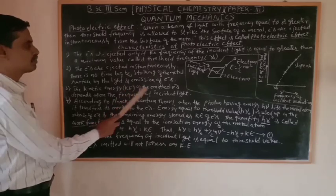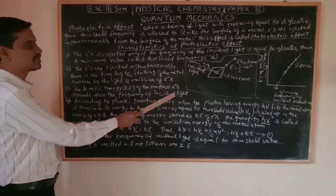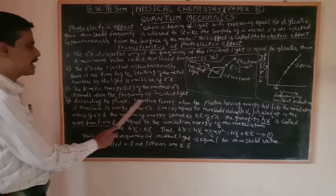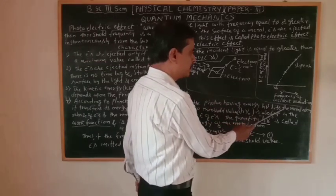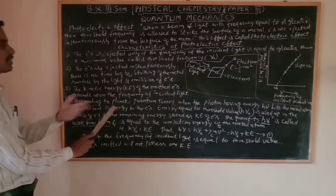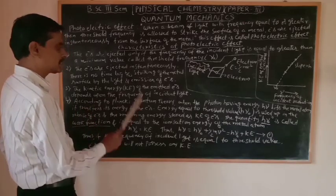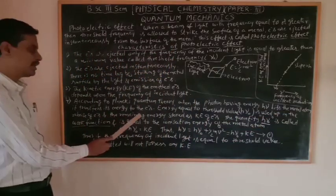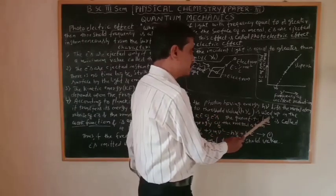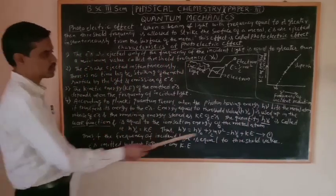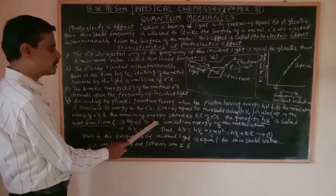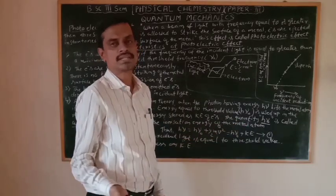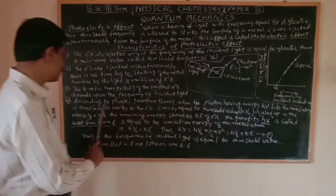The third characteristic: the kinetic energy (KE) of the emitted electrons depends upon the frequency of the incident light. If the frequency of the incident light changes, the kinetic energy also changes. Fourth characteristic: according to Planck's quantum theory, when a photon having energy hν hits the metal atom, it transfers its energy to the electron. Energy equal to the threshold value hν₀ is used to release the electron, and the remaining energy is stored as kinetic energy of the electron. The quantity hν₀ is called the work function, and is equal to the ionization energy of the metal atom.